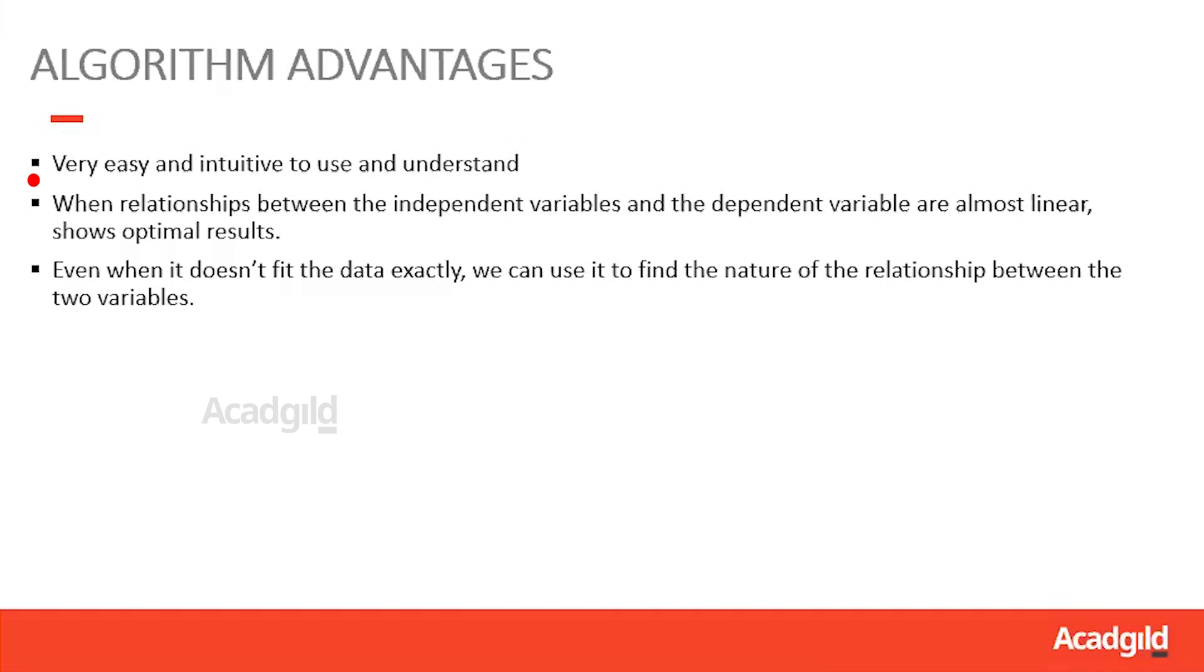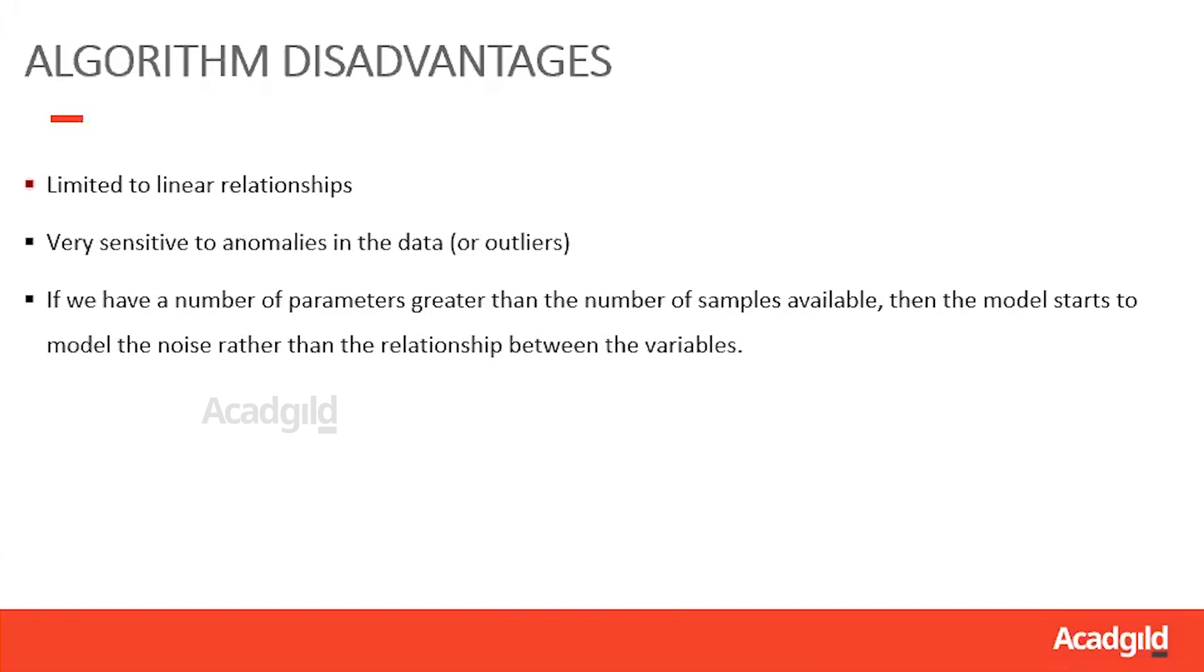The advantages of this algorithm are that when the relationship is linear, it models it even if the relationship is not exactly defined by the model. And it's easy to understand and intuitive to use. The disadvantages of linear regression are that it is limited to linear relationships, it is very sensitive to outliers, and when the number of samples that we have to model the data is fewer than the number of parameters that we have, the model starts modeling the noise rather than the actual relationship between the variables.